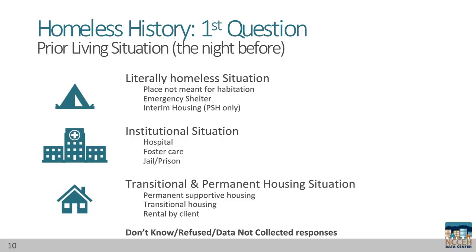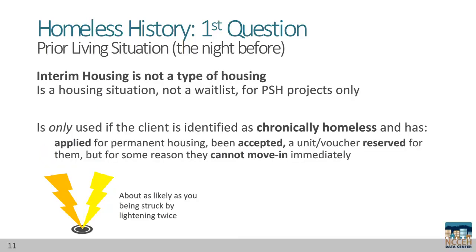Transitional and permanent housing situations include housed situations such as previously homeless projects or subsidies, private rentals, or transitional housing projects. At the bottom of the list are the standard responses of client doesn't know, client refused, or data not collected. One response under literally homeless situations is interim housing — only permanent supportive housing projects use this option, and even then it will be really rare. The interim housing response cannot be used as a waitlist.